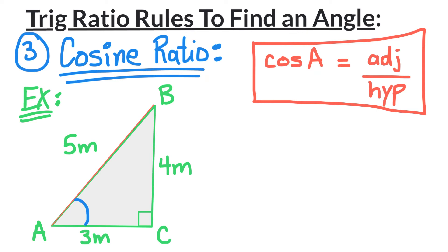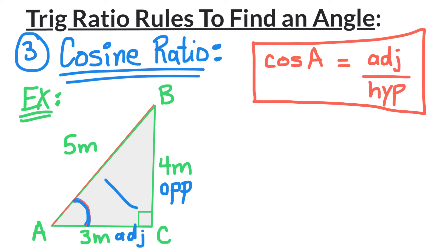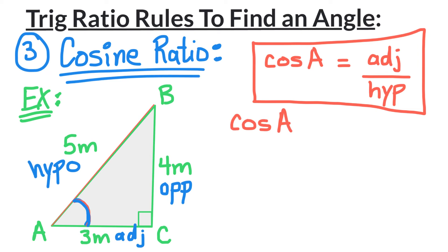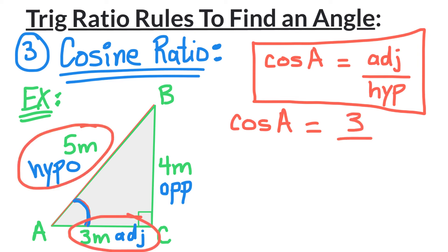Let's label the triangle according to angle A: across from angle A is the opposite side, next to angle A is the adjacent side, and the hypotenuse is always across from the right angle C. Now let's find cosine A. We leave cosine A on the left and fill in the numbers: the adjacent side is 3 divided by the hypotenuse 5.